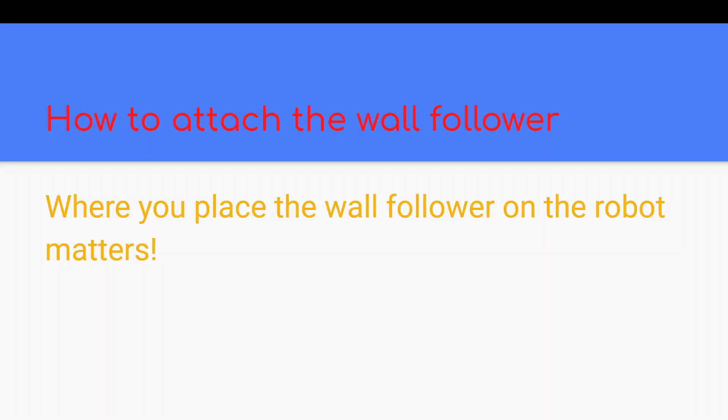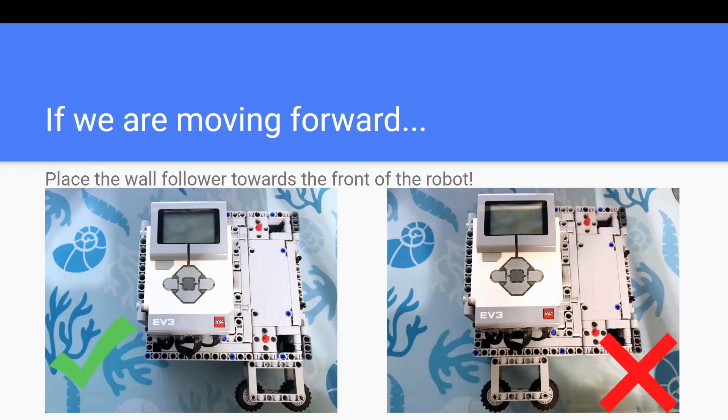However, we aren't done after we build our wall follower. Where we place it on our robot is also important. If we want to be moving forward with our wall following, our wall follower has to be placed towards the front of the robot, and here's why. If it is placed too much towards the back, this will happen.